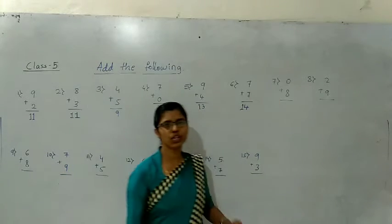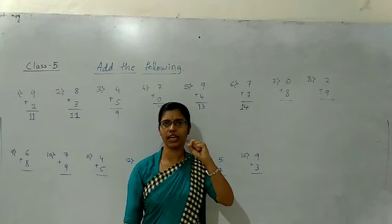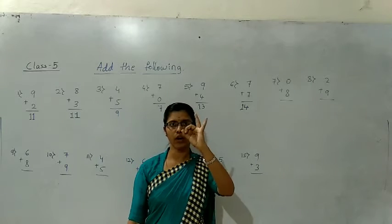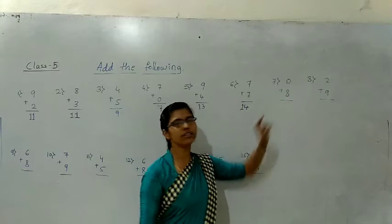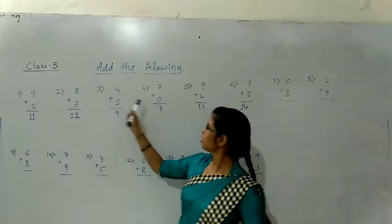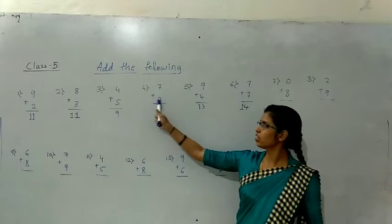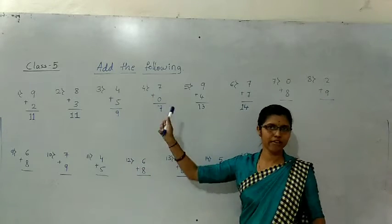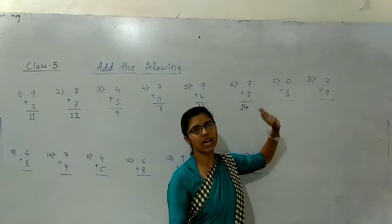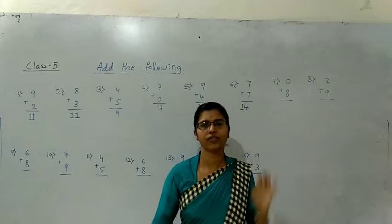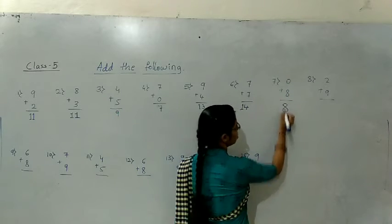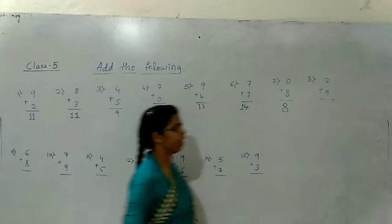Now, 0 plus 8. The upper number is 0. We already discussed that 7 plus 0 equals 7. So 0 plus 8 — the answer is 8.